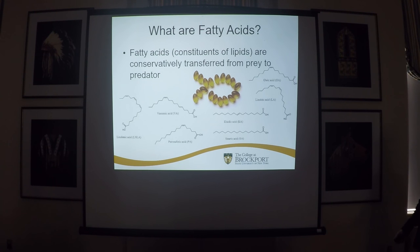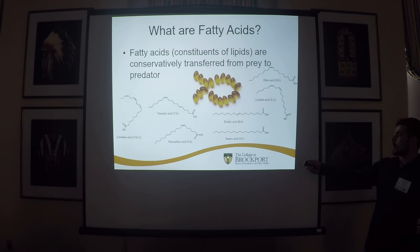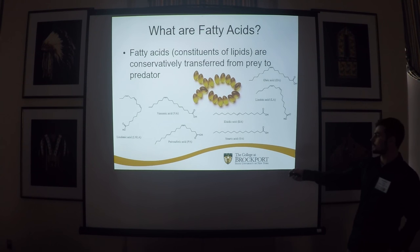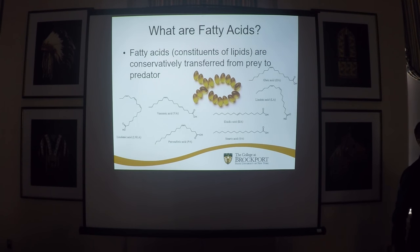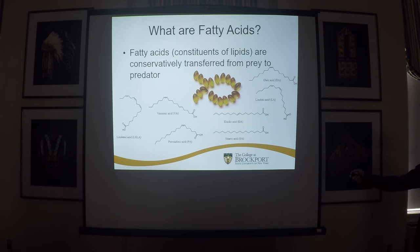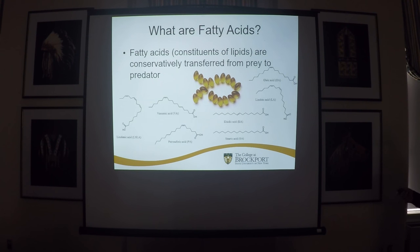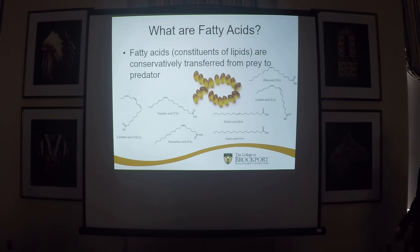Here are a few different examples of fatty acids. You can see the long carbon chains, and the number of carbons in each fatty acid can vary. You'll also see double lines in some of these fatty acids — those represent double bonds — and the number of double bonds and their locations in the carbon chain can vary as well. So you get a lot of different fatty acids because of that.